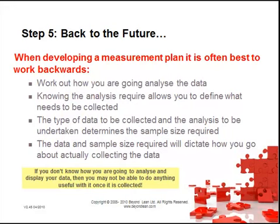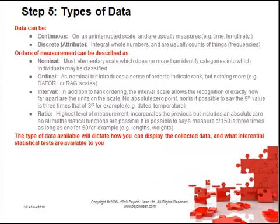The data and sample size required will then dictate how you go about actually collecting the data. If you don't know how you're going to analyse and display your data, you may not be able to do anything useful with it once it's collected. Your different types of data can be continuous or discrete. Orders of measurement can be described as nominal, ordinal, interval or ratio. The type of data available will dictate how you can display the collected data and what inferential statistical tests are available to you.